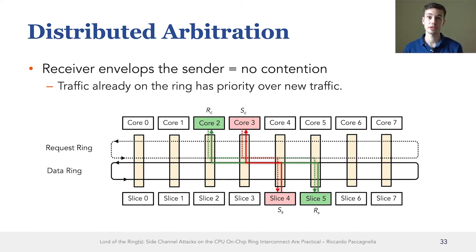An intuitive way to think about the distributed arbitration policy is to think about the ring interconnect as a train going along with boxcars. A ring stop that wants to inject a packet into the ring needs to wait for a free boxcar. Contention happens when the ring stop wants to inject a packet, but there are no free boxcars, and so it has to wait for a free boxcar to arrive. In the example of this slide, since the train is traveling counterclockwise, then the receiver always has priority both on the request ring and on the data ring. And so there is never contention.